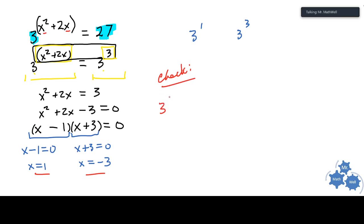So one squared plus two times one should equal 27. So three to the power of, that's one plus two, three to the three equals 27. That's true. Awesome. Let's check the other one.